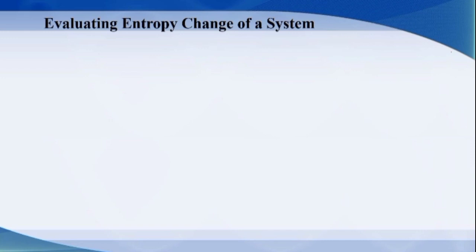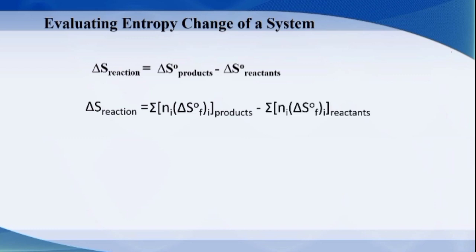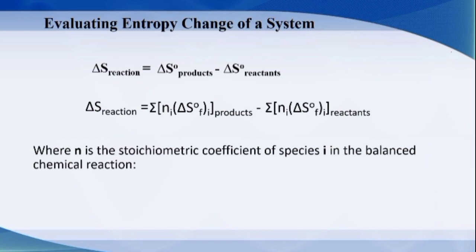To evaluate the entropy change of the system, we use the formula: entropy change of the reaction equals the entropy change of products subtracted by the entropy change of reactants. By symbol, it is denoted as ΔS_reaction = Σ(products) − Σ(reactants), where n is the stoichiometric coefficient of species i in the balanced chemical reaction.